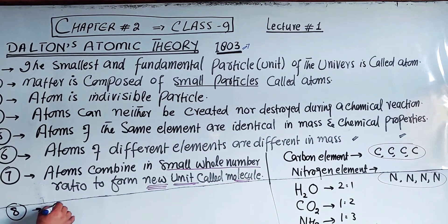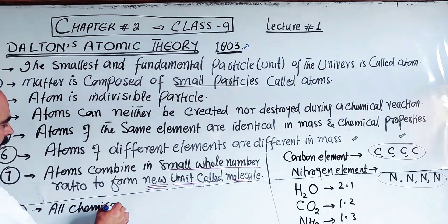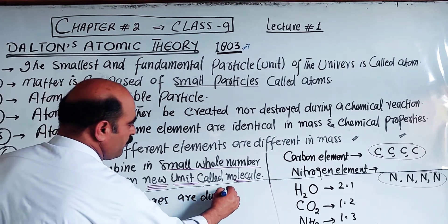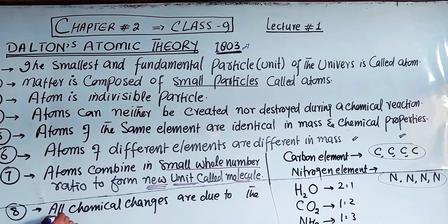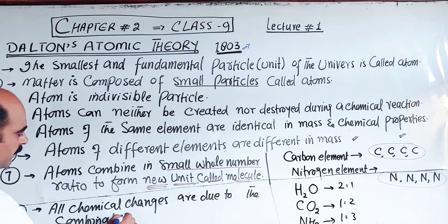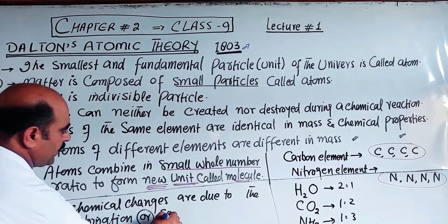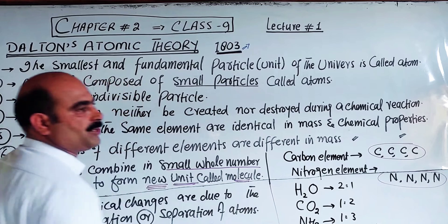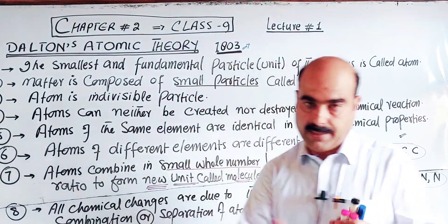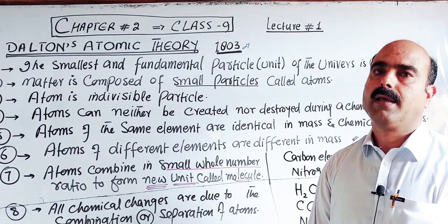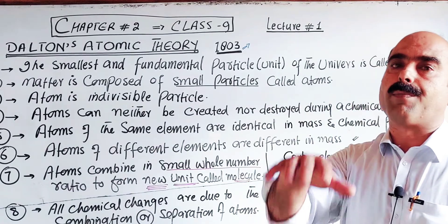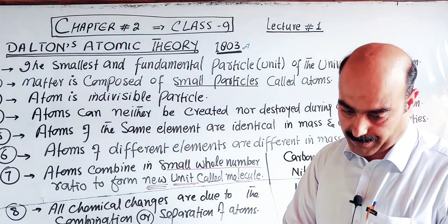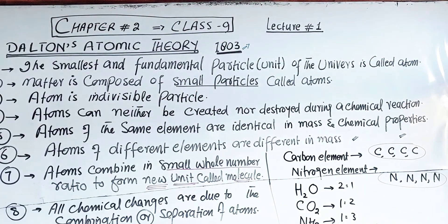Point Number Eight: All chemical changes result from the combination or separation of atoms. All chemical changes are due to the combination or separation of atoms. When atoms combine in a small whole number ratio, a new product or molecule is formed. When a compound breaks apart, atoms separate — that is the separation of atoms causing chemical change.